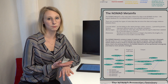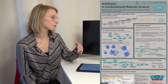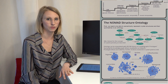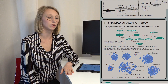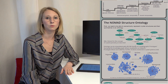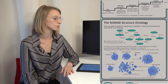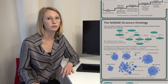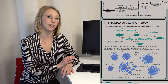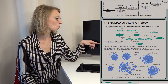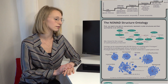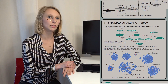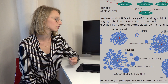Now we want to connect the Nomad Metainfo to more semantic ontologies. I have created the Nomad Structure Ontology because we need to find a way to semantically represent crystals. The Structure Ontology can then be instantiated with data, for example from the AFLOW library of crystallographic prototypes. This knowledge graph can then be queried using the ontology query language SPARQL and visualized as a network — for example, showing prototypes as blue bubbles and the corresponding crystal systems as red bubbles, size-scaled by the number of atoms.